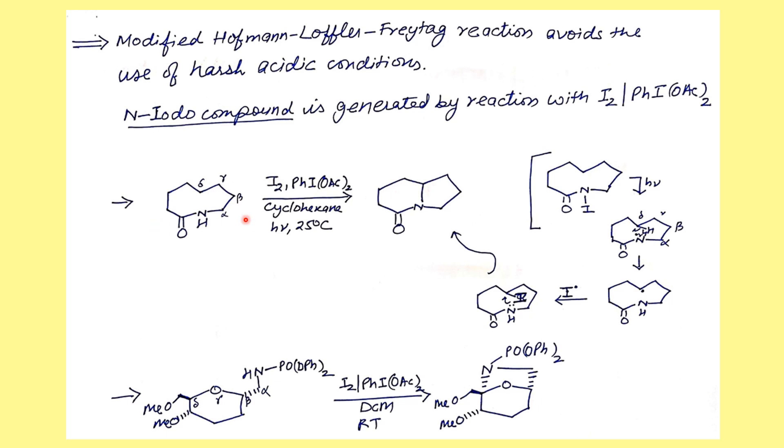The simple thing we have to do is see alpha, beta, gamma, delta where the delta proton is. That is exactly where the cyclization is going to take place. Remember these are milder conditions, not harsher. In this example, alpha, beta, gamma, delta, the cyclization takes place from the same side to give the desired product. Whatever examples I have covered here, questions will only be asked from these examples.